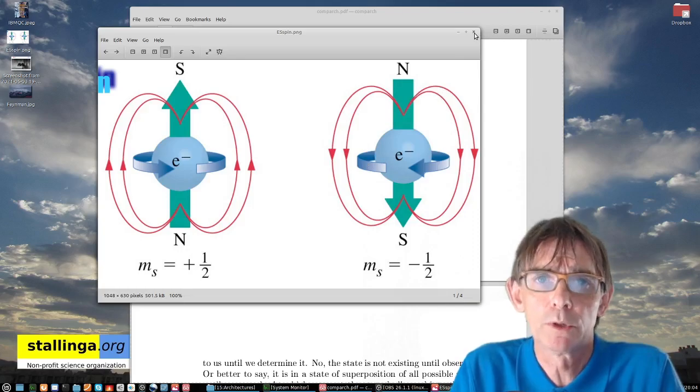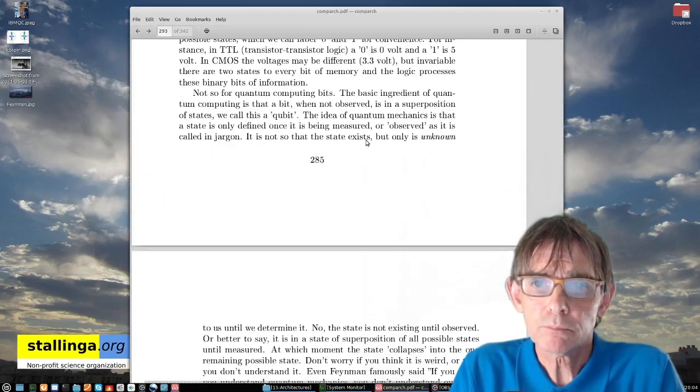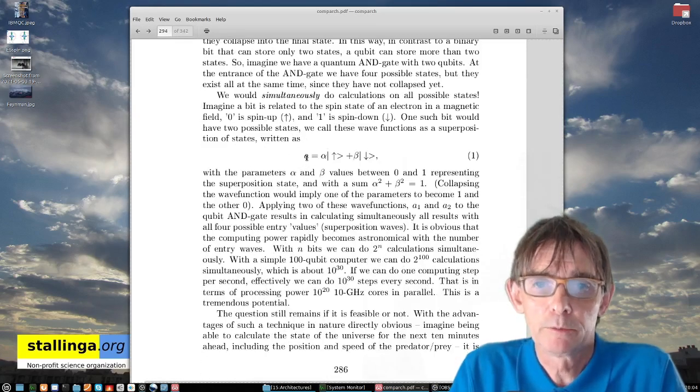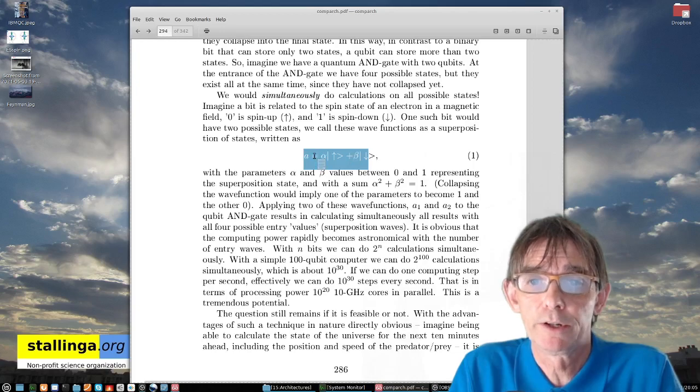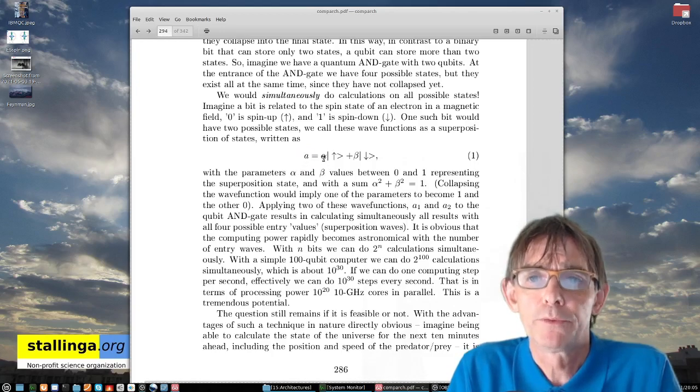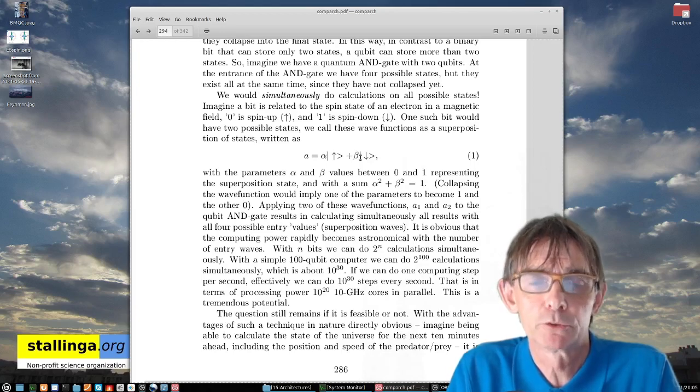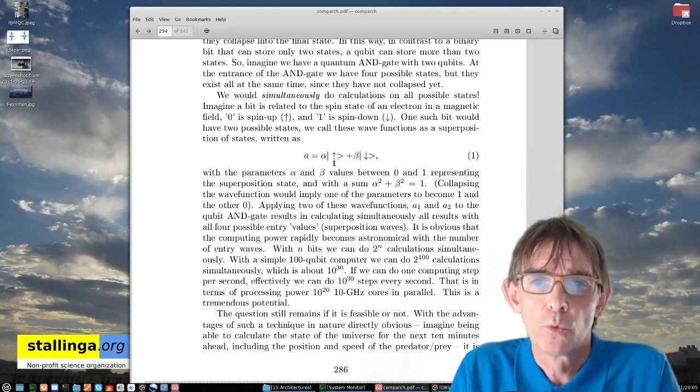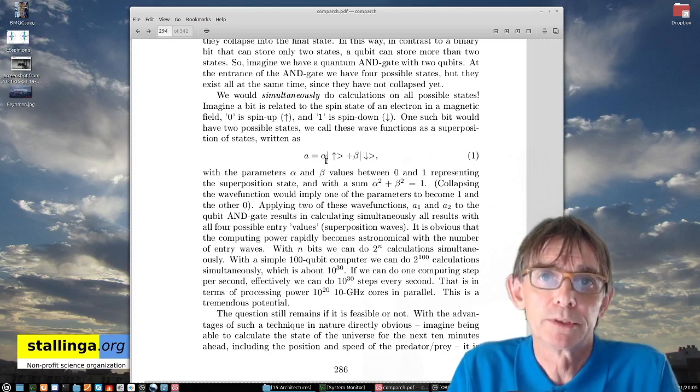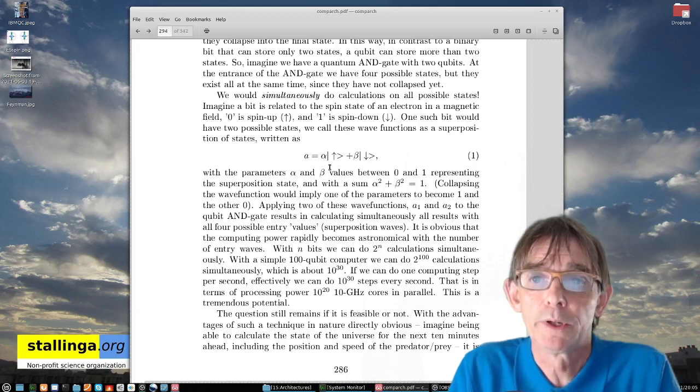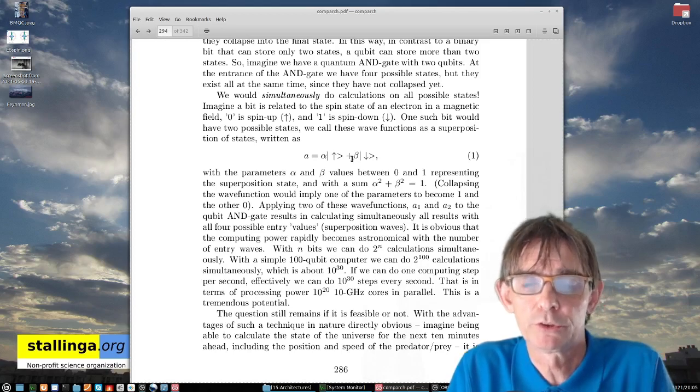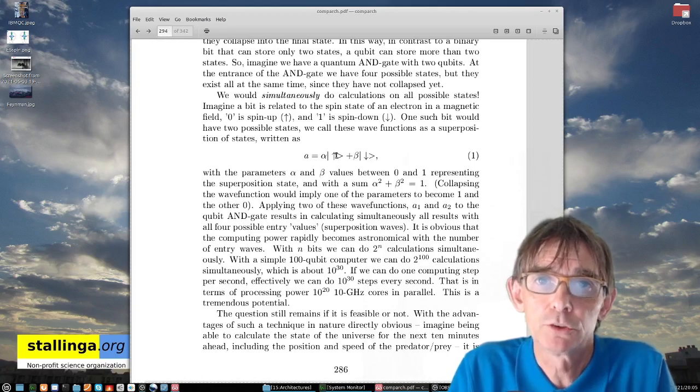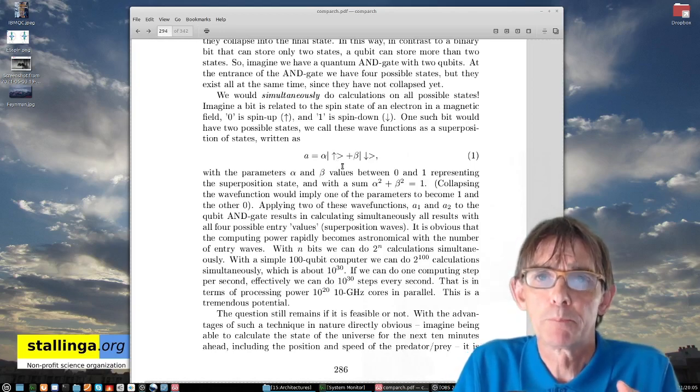So how can we use this now to make a quantum computer? Well, we take these two things. So we have generally a wave function that a bit A at the entrance of our gate, it would be both in the spin up and the spin down state because we didn't observe it yet. But we are already going to do calculations with this wave function before observing it. So we apply the wave function to our gate. And then we are doing simultaneously the calculations with the spin up state as well as the spin down state. So one bit of information, actually I should say this, one bit arriving at your gate actually has two bits of processing information.